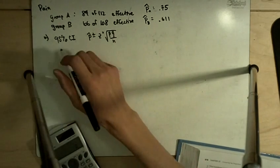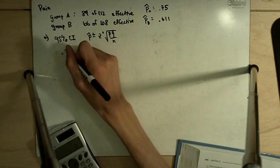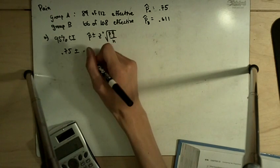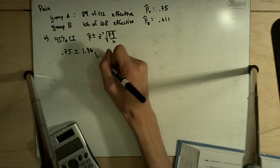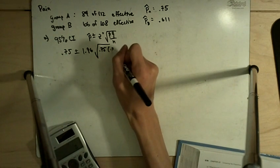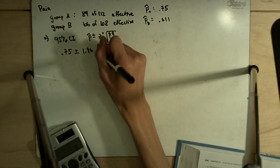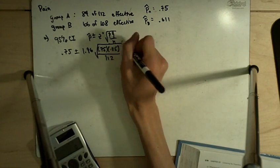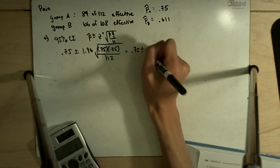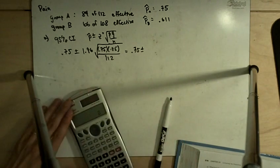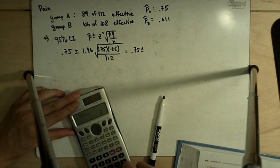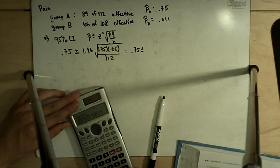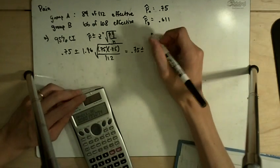So for part A, it's creating a 95% confidence interval for medication A, it's going to be 0.75 plus or minus our Z star, 1.96 times the square root of 0.75 times 0.25, 1 minus 0.75 divided by 112. So this becomes 0.75 plus or minus, let's do this 0.75 times 0.25 divided by 112. Take the square root of that times 1.96.